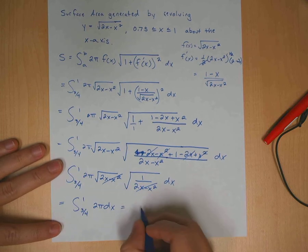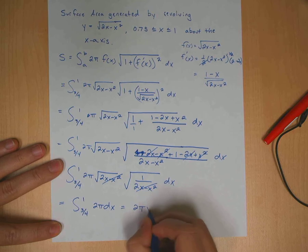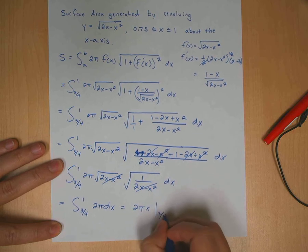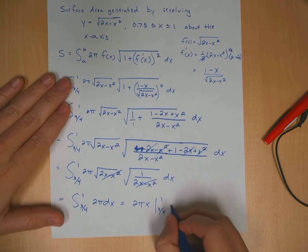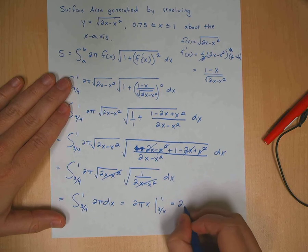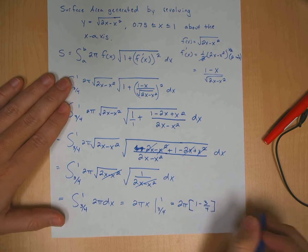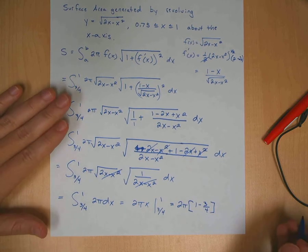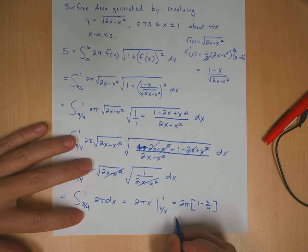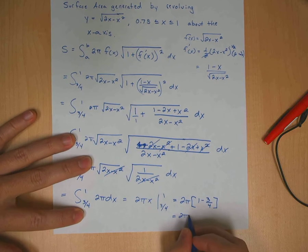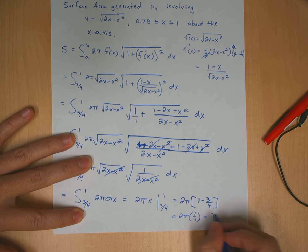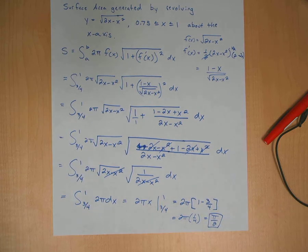Taking the integral of 2π gives us 2πx, evaluated from 3/4 to 1. Plugging in, we get 2π times (1 minus 3/4), which is 2π times 1/4, which equals π/2. So the surface area is π/2.